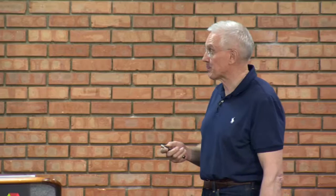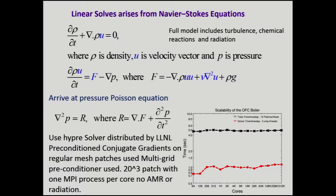We need to figure out how to deal with radiation. For the solver side, here's a simple model problem: a low Mach number approximation gives us a pressure Poisson equation. We use Hypre, which comes out of Lawrence Livermore — a really nice code with preconditioned conjugate gradients on regular mesh patches and a multigrid preconditioner. John Schmidt managed to run this out to 512,000 cores on Mira with one MPI process per core, not per node, and here's the weak scaling of the overall calculation and of Hypre. We're very pleased with this result.